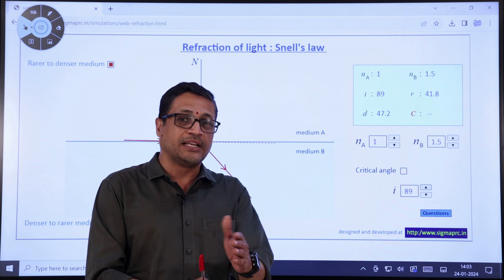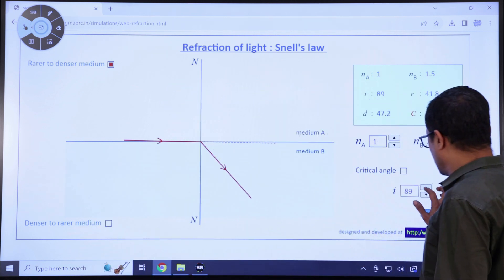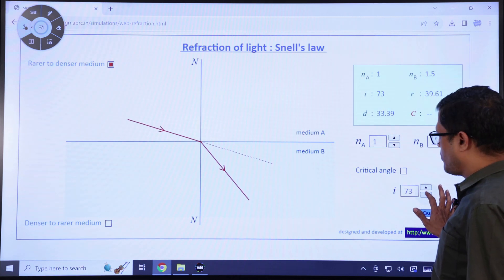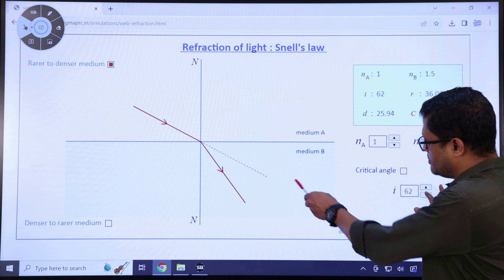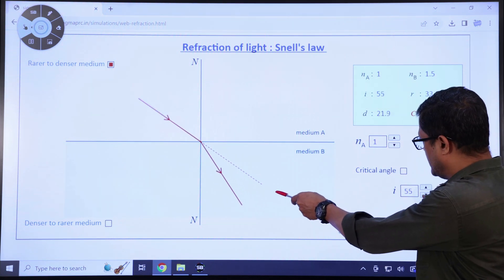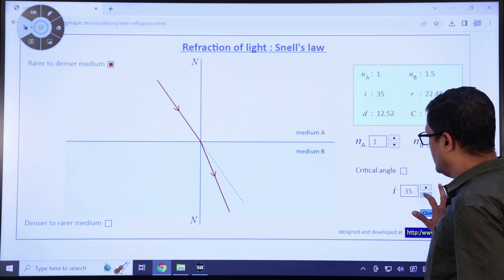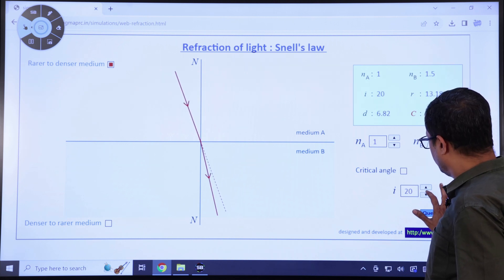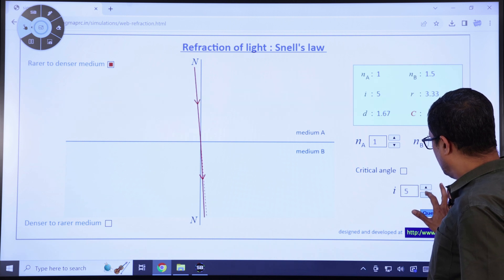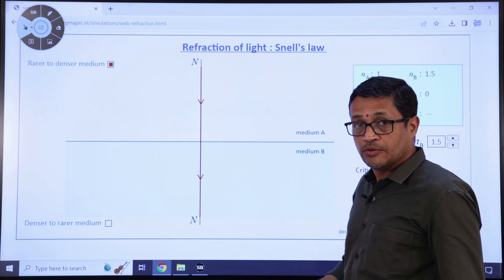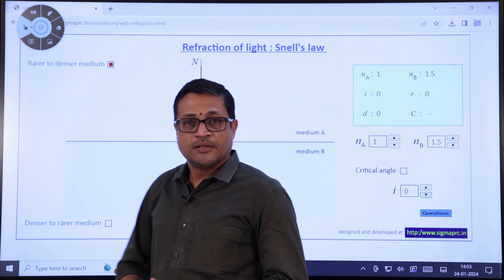Let us decrease the angle of incidence. I will quickly decrease it, and you are able to observe that the deviation is also decreasing. But what happens when the angle of incidence becomes 0? Seven, six, five, four, three, two, one, and zero. Now there is no bending of light, so should we say there is no refraction of light? Probably not.